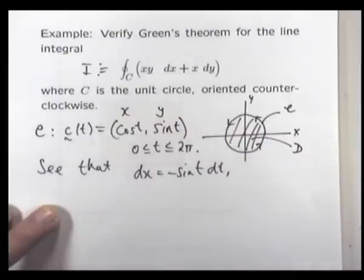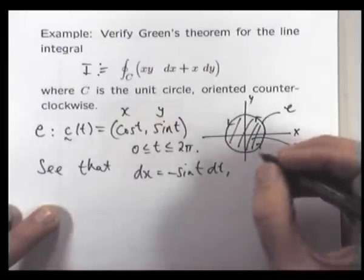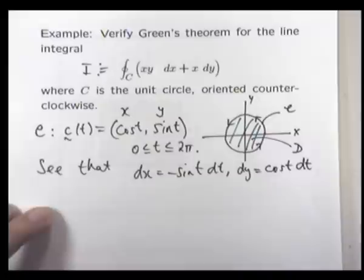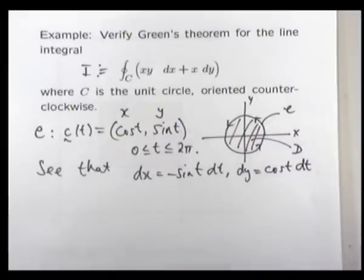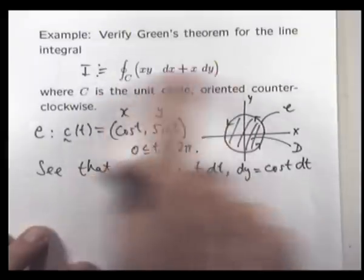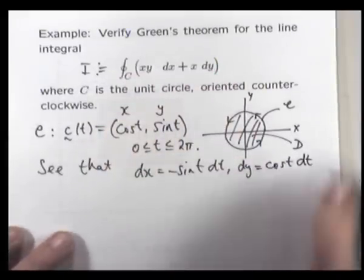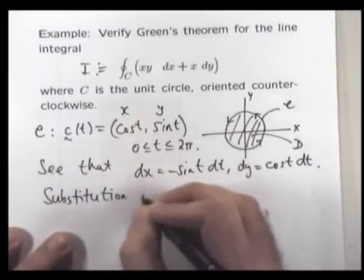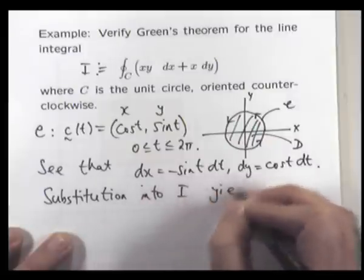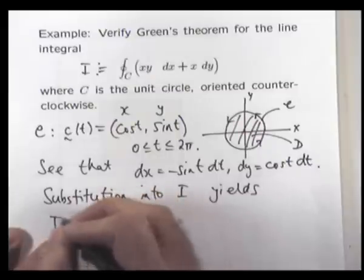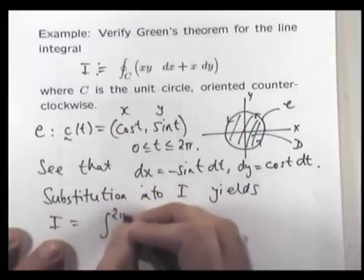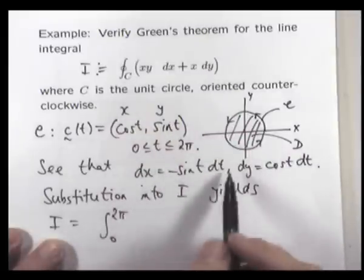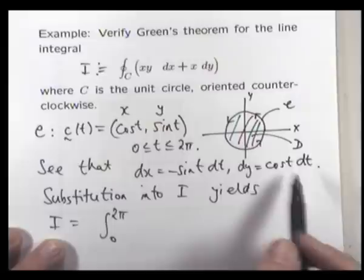And now what I'm going to do is evaluate that line integral. So, along the parameterization, dx is minus sine t dt, and dy is cos t dt. And now, essentially, all I'm going to do is substitute into the line integral and work things out. Okay, it's going to yield the following. So, I'll replace x with cos t, y with sine t, dx with minus sine t dt, and dy with cos t dt.